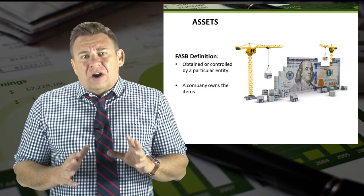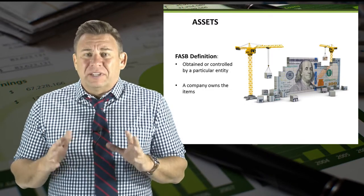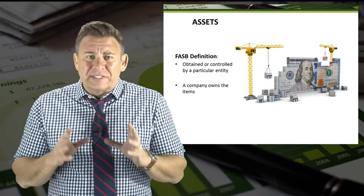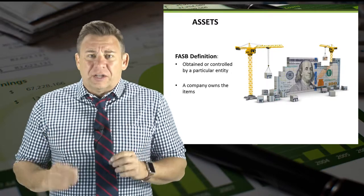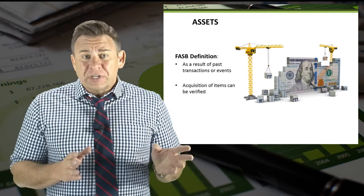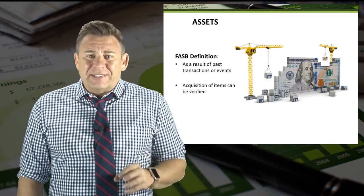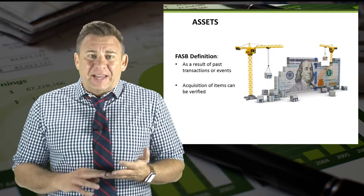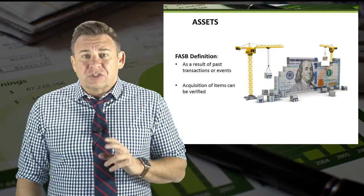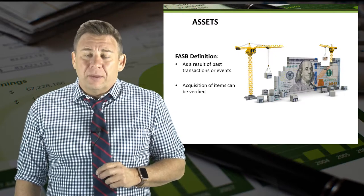There are many complex assets, often related to certain types of lease agreements, where a company doesn't own an asset but controls it enough to call it an asset. But that's beyond the scope of this course. As a result of past transactions or events means that a transaction exists where the acquisition of an asset can be verified. If these three components describe an item, then that item is an asset and needs to be reported on the balance sheet.